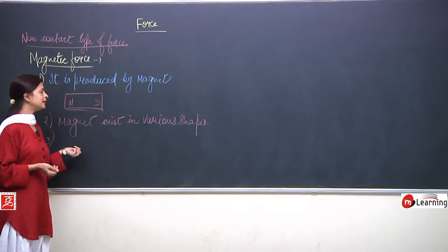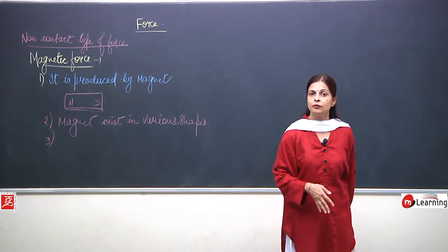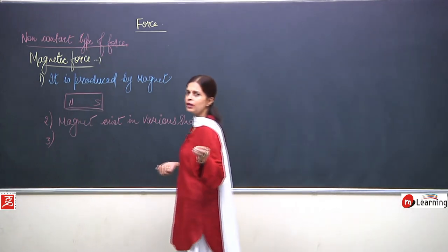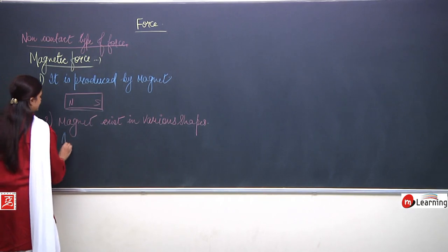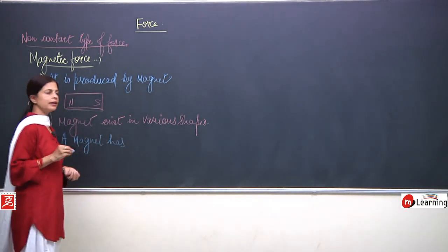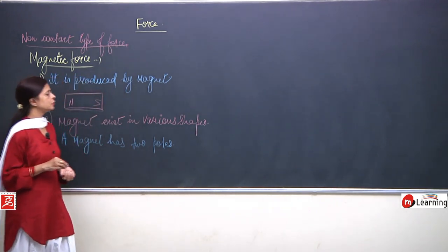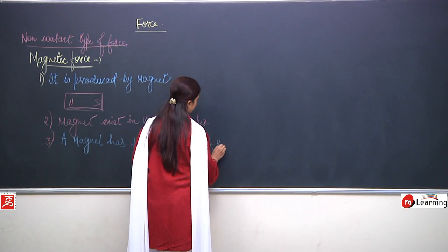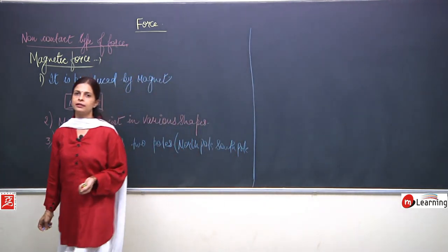So magnet exists in various shapes - disc shape, bar shape, horseshoe shape. Now, how many poles does a magnet have? A magnet has two poles. Which are the two poles? The two poles are the north pole and the south pole.